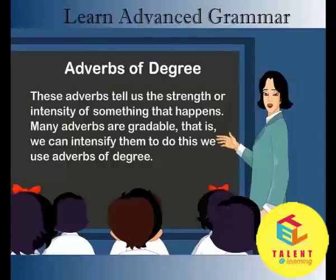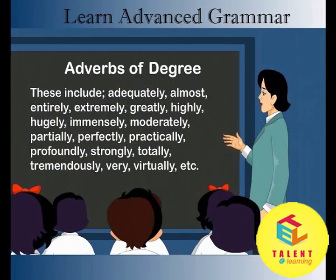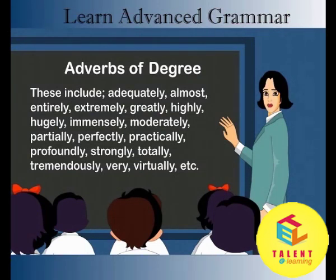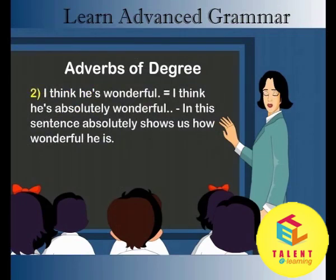Adverbs of degree. These adverbs tell us the strength or intensity of something that happens. Many adverbs are gradable — that is, we can intensify them. To do this, we use adverbs of degree. These include adequately, almost, entirely, extremely, greatly, highly, hugely, immensely, moderately, partially, perfectly, practically, profoundly, strongly, totally, tremendously, very, virtually, etc. For example: He is lazy / He is extremely lazy — extremely shows us how lazy he is. I think he is wonderful / I think he is absolutely wonderful — absolutely shows us how wonderful he is.